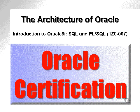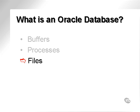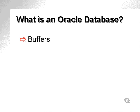What are these pieces? An Oracle database is made up of a number of pieces. These things are mainly buffers, processes, files, and network communication. In computer jargon, buffers is basically the use of memory or random access and virtual memory on a database server.